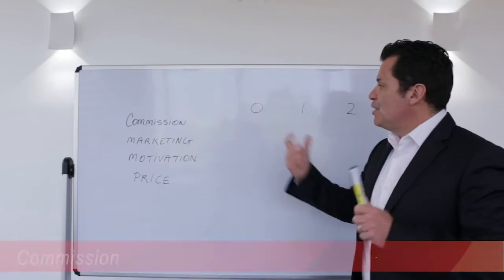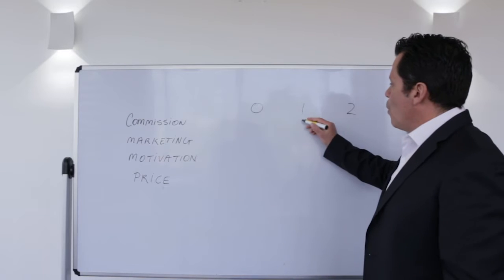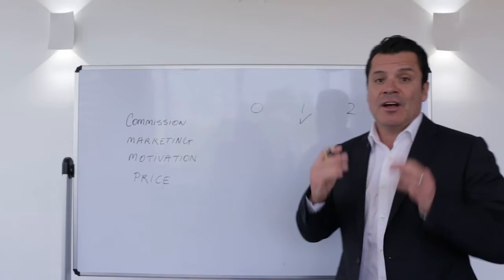Okay, so first thing: Commission. If you've listed something at around 2% commission, I would generally give you one point. If you've listed at more than 2%, give yourself two points on the commission scale.